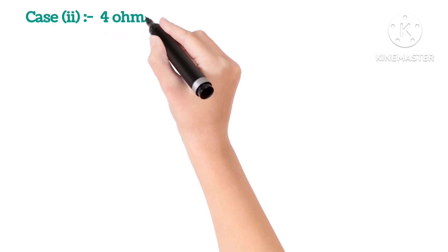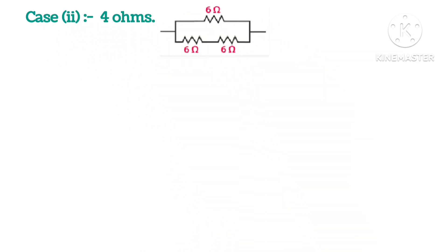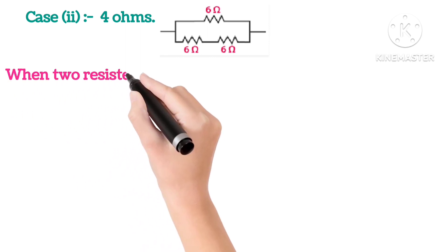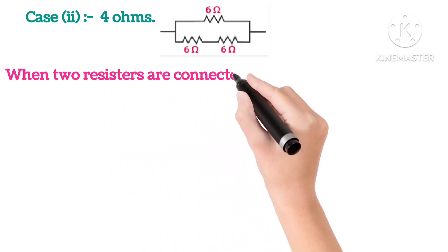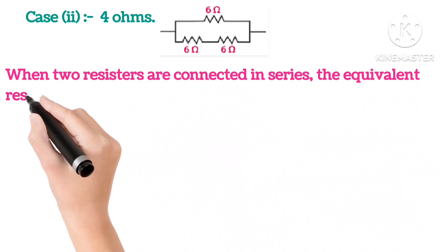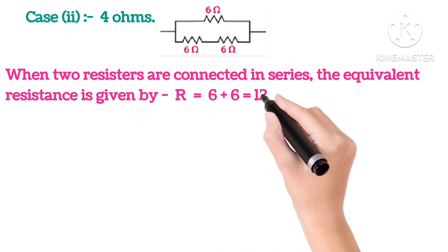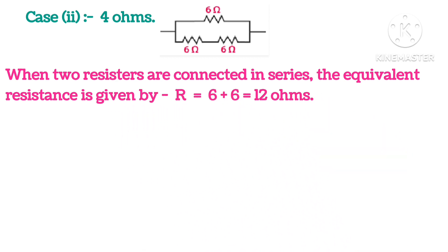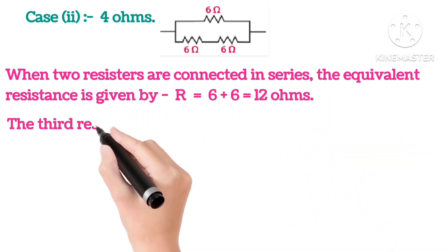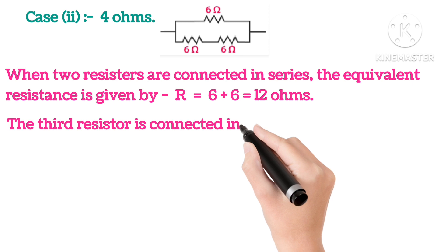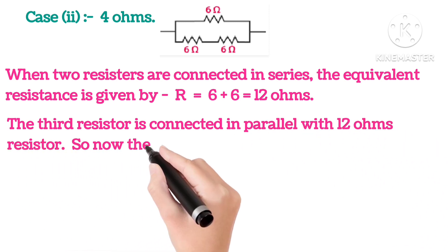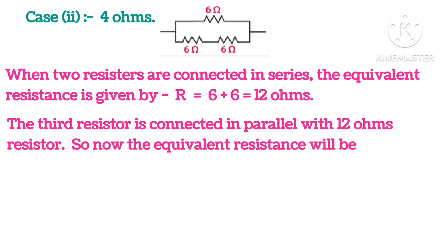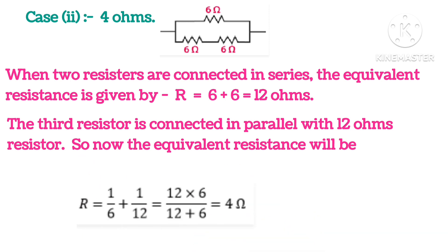Case 2, 4 ohms. Here is the circuit. When two resistors are connected in series, the equivalent resistance is given by 6 plus 6, that is 12 ohms. And the third resistor which is connected in parallel with 12 ohms, so now the equivalent resistance will be 4 ohms.